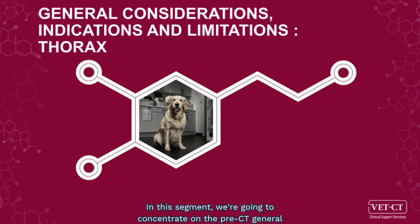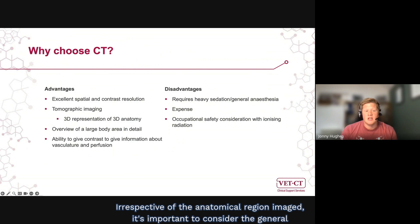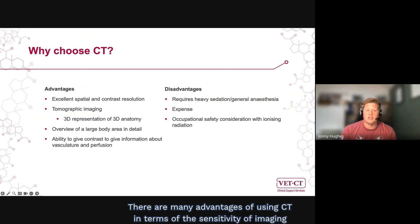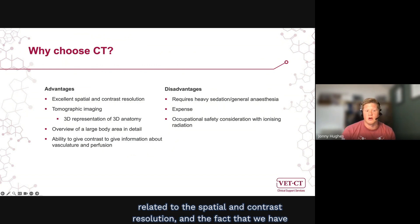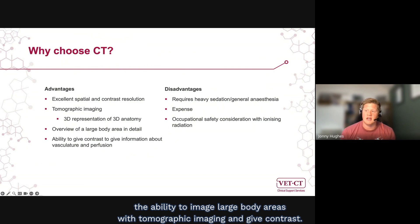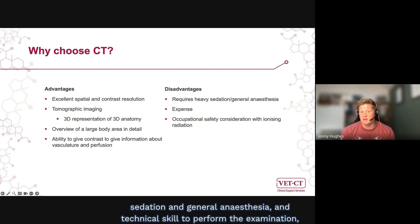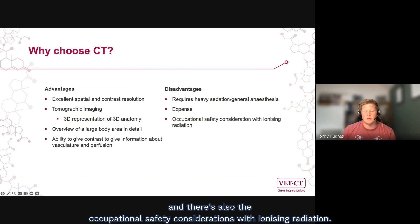In this segment, we're going to concentrate on the pre-CT general considerations, indications, and limitations for the thorax. Irrespective of the anatomical region imaged, it's important to consider the general advantages and disadvantages of CT. There are many advantages in terms of the sensitivity of imaging related to spatial and contrast resolution, the ability to image large body areas with tomographic imaging, and the ability to give contrast. But there are disadvantages in that it's expensive, requires heavy sedation and general anaesthesia, technical skill to perform the examination, and there are occupational safety considerations with ionizing radiation.